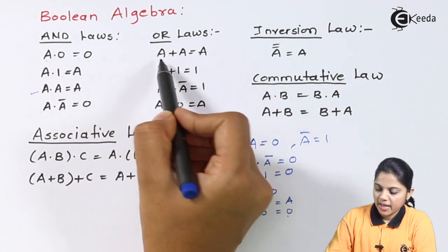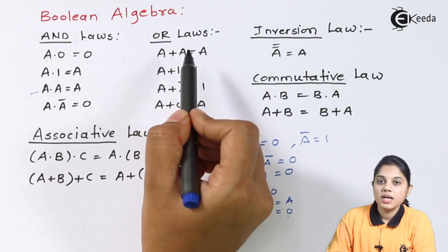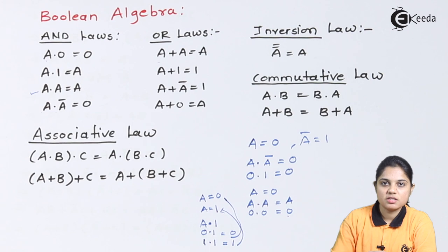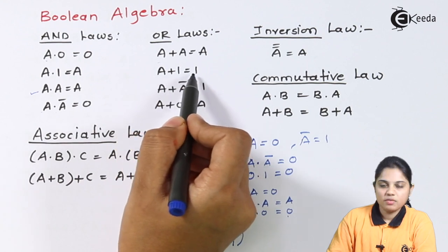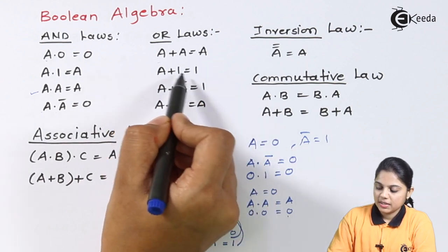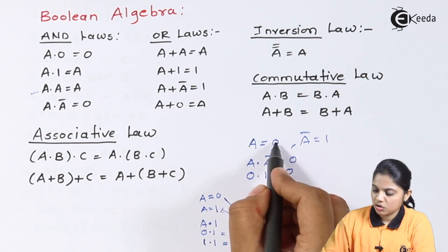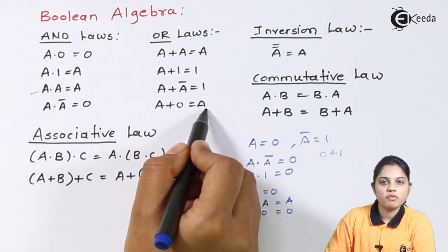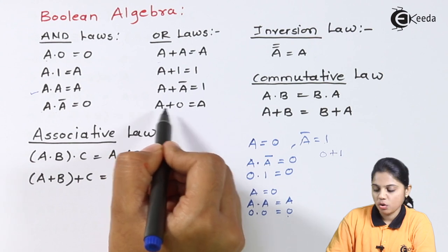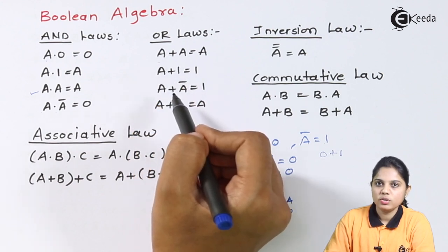The next is the OR law. A plus A is equal to A — if A is 0, 0 plus 0 is 0; if A is 1, 1 plus 1 is 1, because we are dealing with a digital signal, not numerical addition. 1 represents one discrete level of a digital signal. A plus 1 will be 1, regardless of whether A is 0 or 1. A plus A-bar will be 1 — if A is 0, A-bar is 1, so 0 plus 1 equals 1. A plus 0 will be A. These OR laws indicate the addition of two same or complementary inputs.